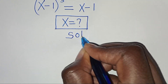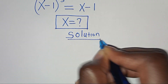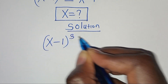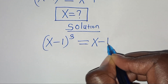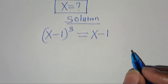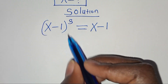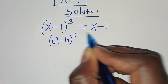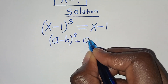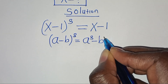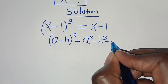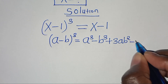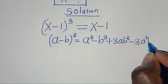Now let's provide a solution from here. We have x minus 1 to the power of 3, this is equal to x minus 1. We have that x minus 1 to the power of 3 is in the form of a minus b to the power of 3, which we can express as a to the power of 3 minus b to the power of 3, then plus 3ab to the power of 2, then subtract 3a squared multiplied by b.